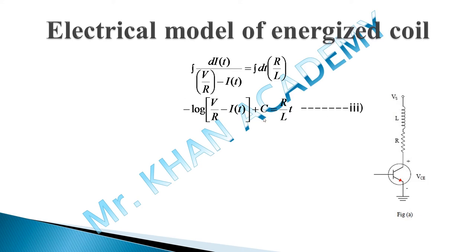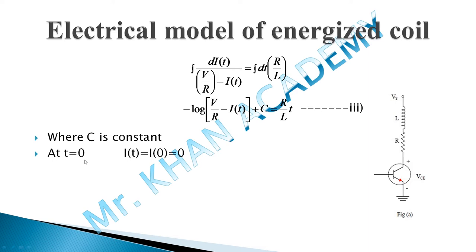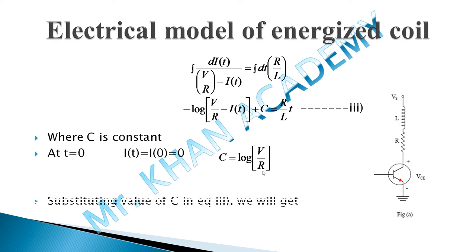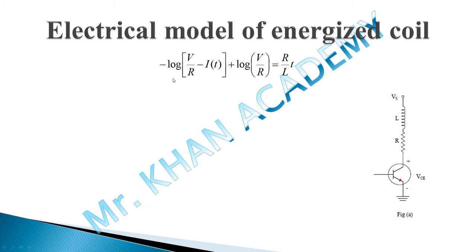To find the integration constant, we apply the boundary condition: at T = 0, current I = 0. Substituting these values gives: −ln(V/R) + C = 0, so C = ln(V/R). Substituting this constant back into the equation: −ln(V/R − I) + ln(V/R) = (R/L)·T. Using logarithm properties, this simplifies to: ln(V/R ÷ (V/R − I)) = (R/L)·T.